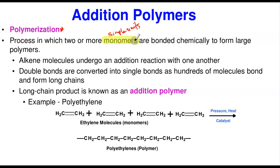This is a chemical reaction. Double bonds — remember alkenes have double bonds — when they polymerize, the double bonds are converted into single bonds as hundreds of these molecules bond and form long chains of carbons, tens of thousands.